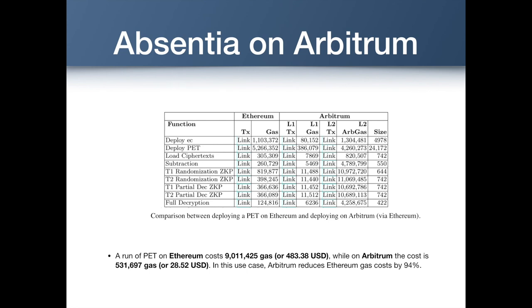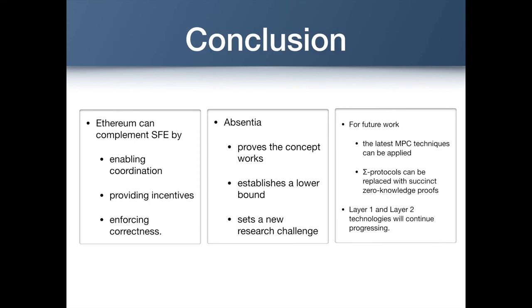This table compares the cost of deploying the PET sub-contract and running its functions on Ethereum's Goerli testnet and on layer 2 with Arbitrum. There is a significant difference between the gas costs: running PET on Ethereum costs around $483, while on Arbitrum the cost is not more than $30. In this use case, Arbitrum reduces Ethereum gas costs by 94%.